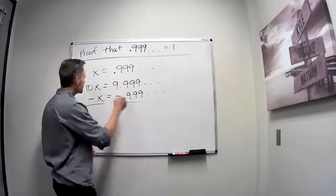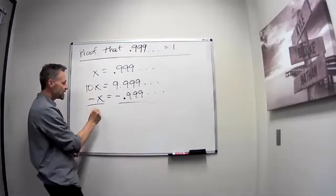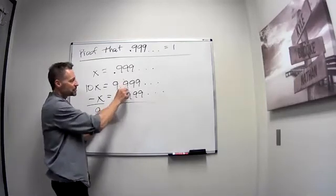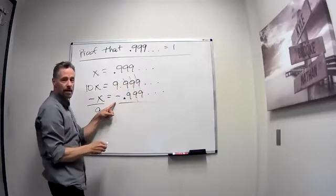And notice on the left side I'm going to get 10x minus 1x is 9x. But on the right side everything to the right of the decimal is going to cancel out and I just get 9.